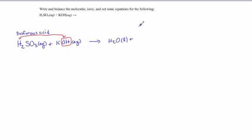The second part, the ionic salt that's formed, comes from the positive ion from our base reacting with the negative ion from our acid. So our potassium and our sulfite.